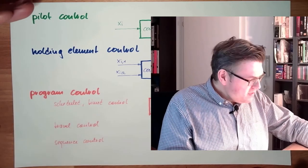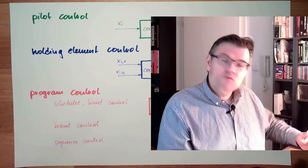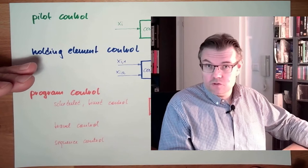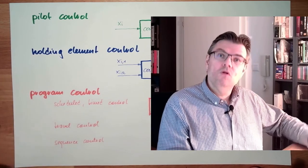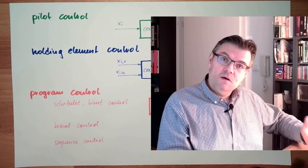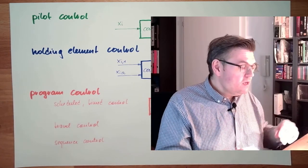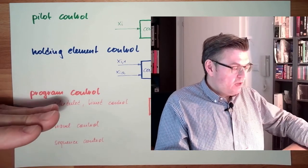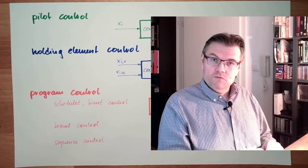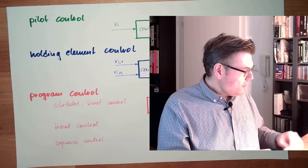So these are the different controller types. Pilot control, most simple. Holding element control stores already something. And then program control, really complex programs, complex things can be done. They're either time controlled, they might be travel controlled, or they might be sequence controlled.